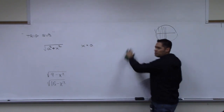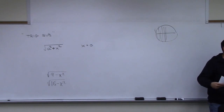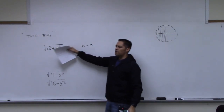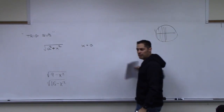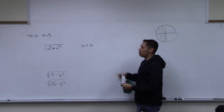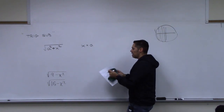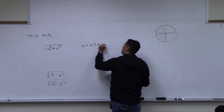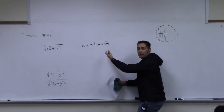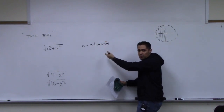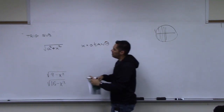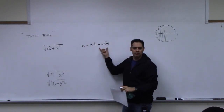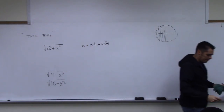The idea is to take something complicated and turn it into a trig integral. This substitution — replacing our variable with a trig function — is called a trigonometric substitution, or trig sub.